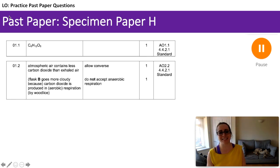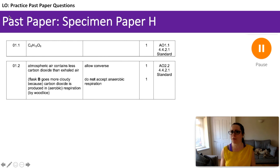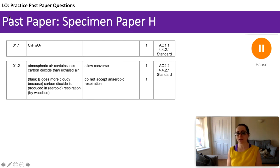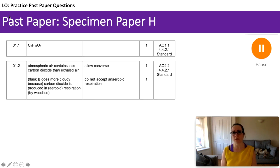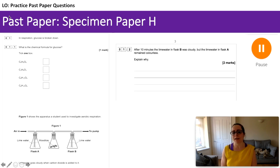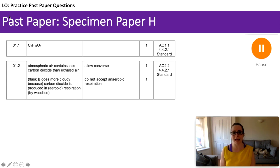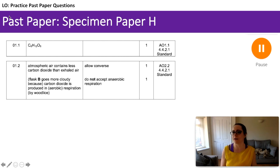The formula for glucose is C6H12O6 — something you should be able to recall really easily. For question 1.2: atmospheric air going into flask A contains less carbon dioxide than exhaled air going into flask B. Flask B goes cloudy because of the carbon dioxide produced in respiration. For question 1.3 — flask A acts as a control, and the purpose of a control is to compare results, or to check that no other factor or variable is influencing the result.